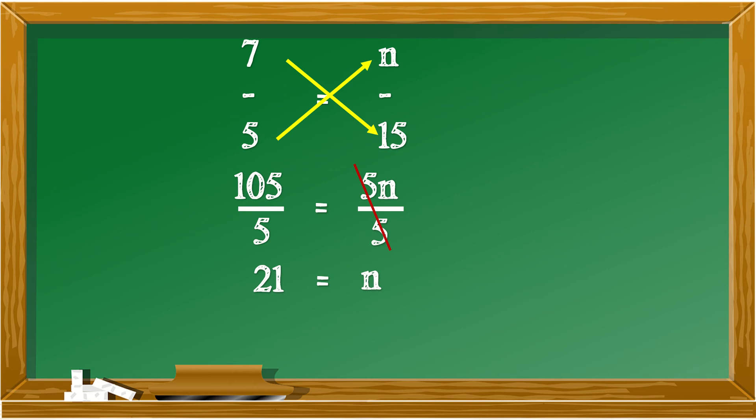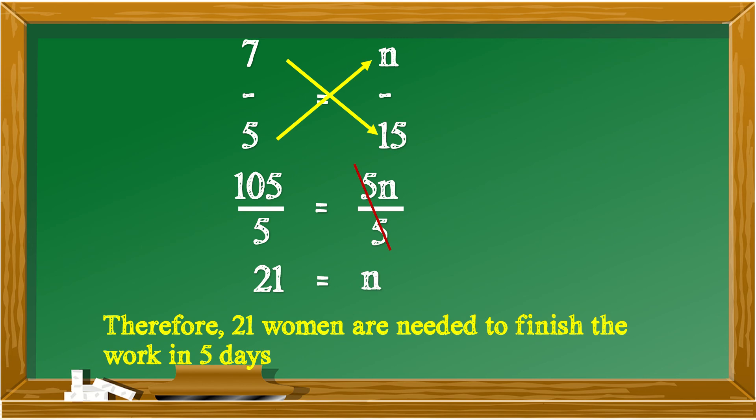Meaning, 21 is equals to N. Therefore, 21 women are needed to finish the work in 5 days. As you can see, as the number of days decreases, the number of women increases. This is an inverse proportion.